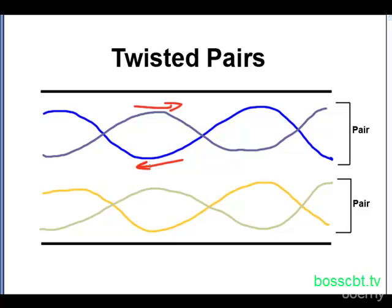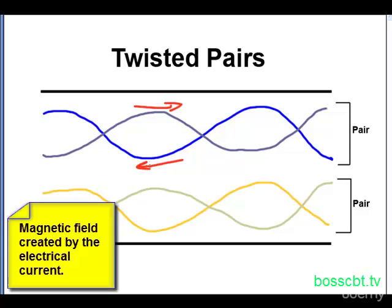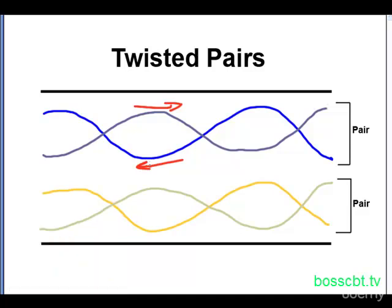When you have a current running over a wire, a magnetic field is created on each wire. This magnetic field creates noise and can interfere with other wires. The reason why the wires are twisted like this is that that twisting actually negates the magnetic fields on each of the two wires.